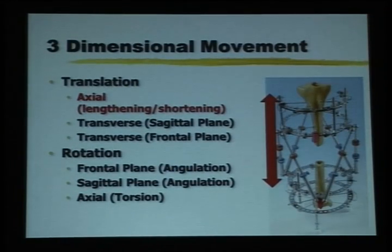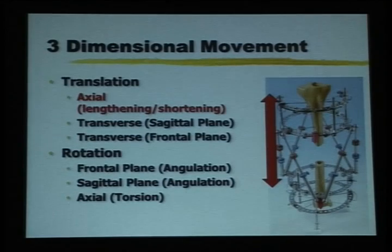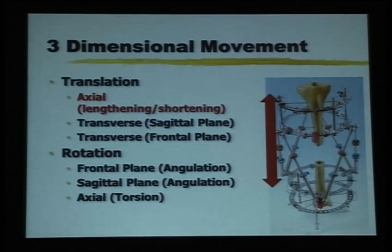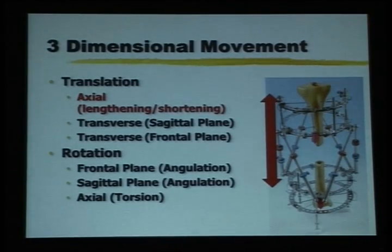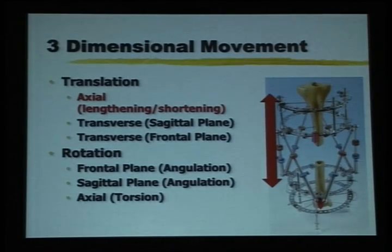What are these three-dimensional movements? There are only two: translation and rotation. Lengthening and shortening is translation along the y-axis in the axial direction. Translation to the right or left is along the x-axis, and translation to the front or back is along the z-axis — the movement is translation, only along different axes.